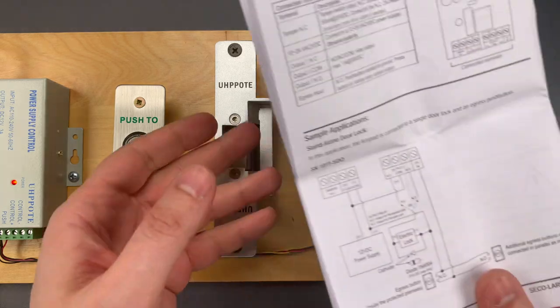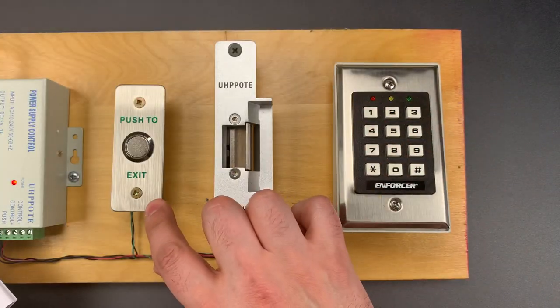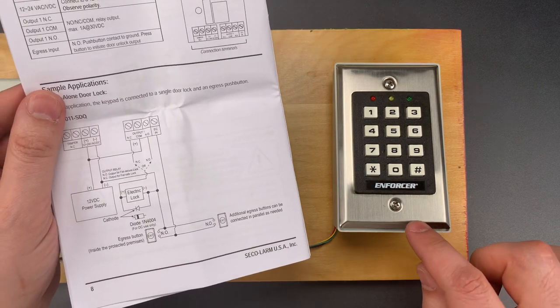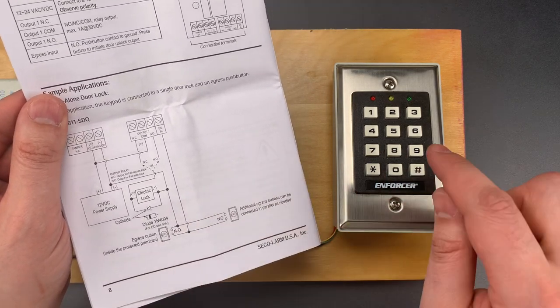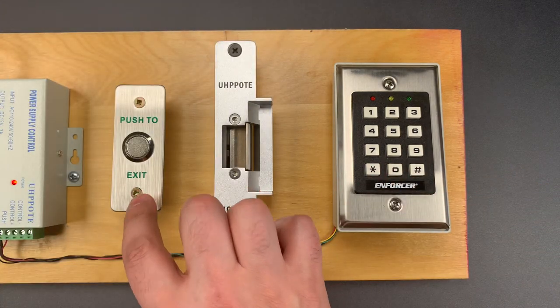Now, without going too much into what I just did, I located the contact point for the egress button. I then bridged it to the cover plate, which connects the circuit and fools this lock into thinking someone on the inside of the door pressed the egress button.